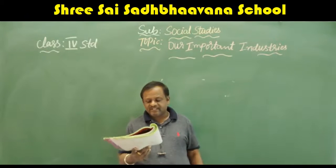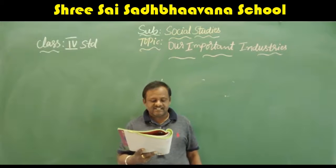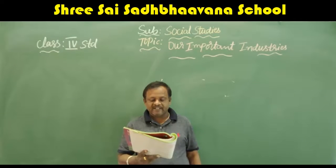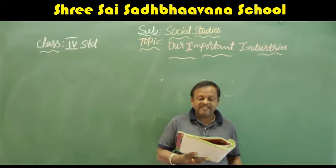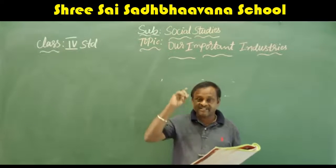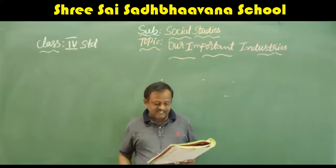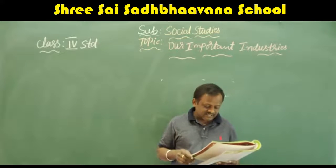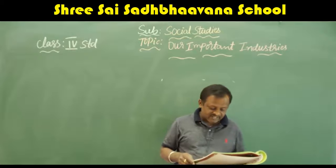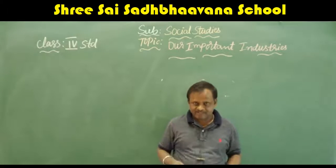For example, textile mills are located near cotton-growing areas, and sugar industries are set up where sugarcane is grown on a large scale. Most industries need power — that means electricity — for running machinery, hence power is an important factor. Transport and communication are also important aspects, as raw materials have to be brought to the industries and finished goods have to be carried to the market.